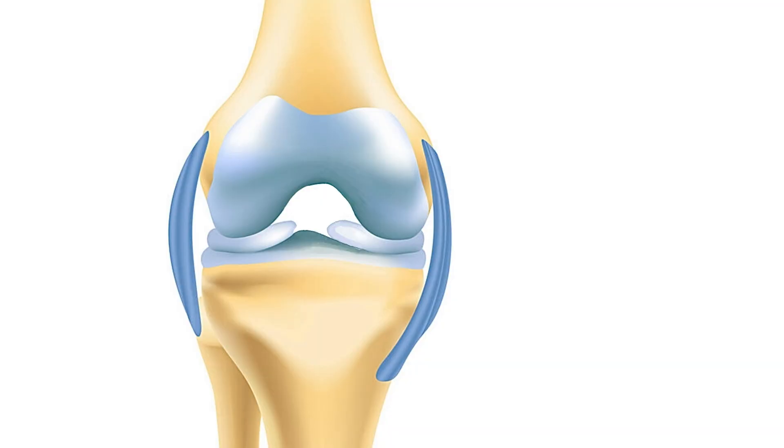Ligament injuries can be classified into three grades depending on the severity of the injury. Grade 1 injuries are often called simple or minor sprains. You'll get a sharp pain after the injury, but you should be able to move the joint afterwards, although it might be a bit painful. There usually won't be any swelling or bruising, and the injury should get fully better over a few weeks without much treatment. It's thought that in Grade 1 injuries, just a few fibres of the ligament have been stretched.